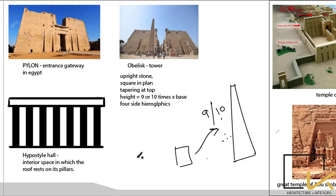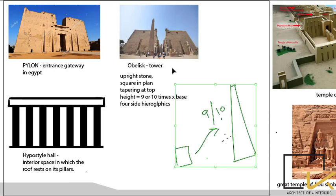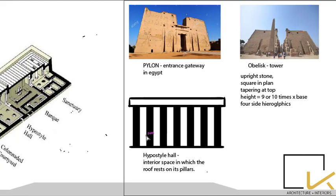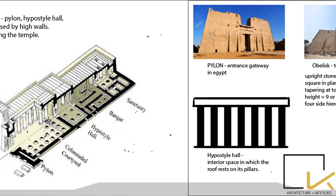The hypostyle hall was seen in Near East architecture as well, but the main development of the hypostyle hall occurred in Egyptian architecture. It is a colonnaded roof structure — a hall whose roof is supported by columns.